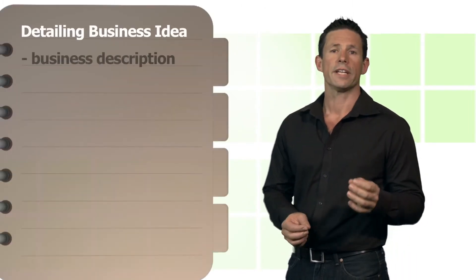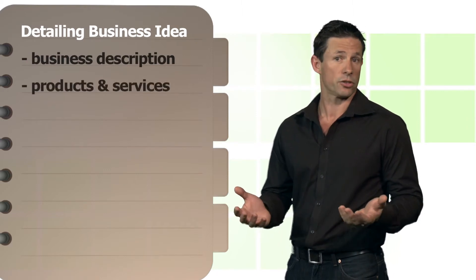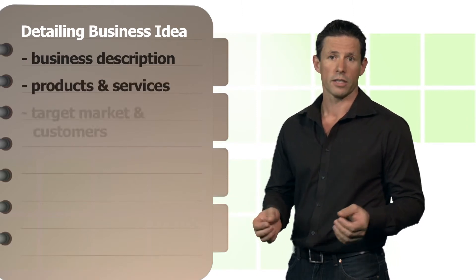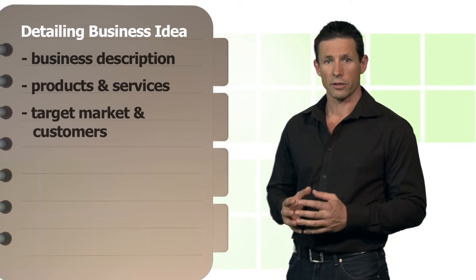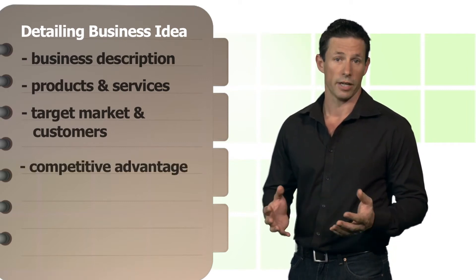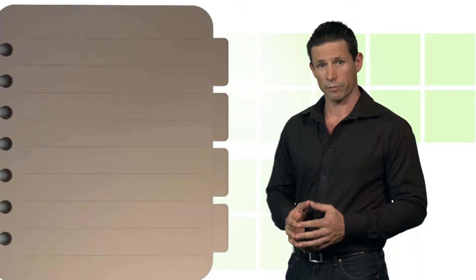Detailing your business idea is the stage where you begin to put your ideas, plans, and vision for your business together. This process involves writing an overall business description, describing the products and services you plan to offer, describing your target market and customers, defining your competitive advantage, and establishing your business objectives.